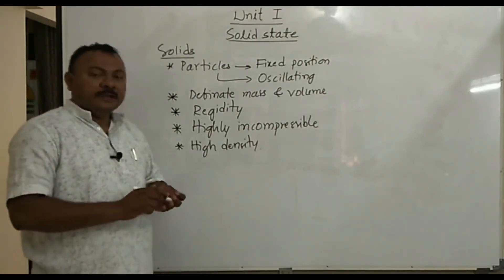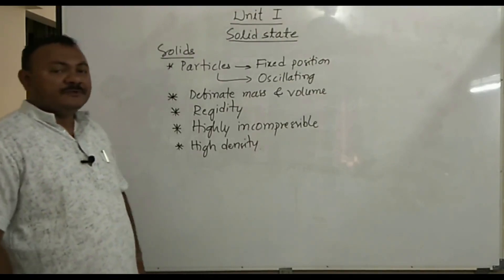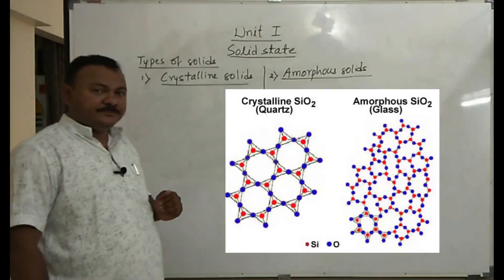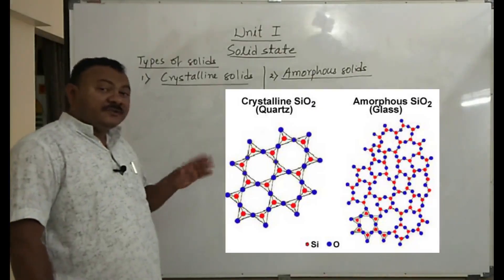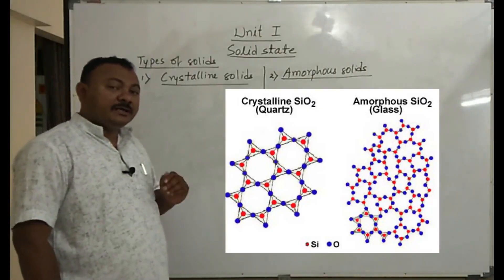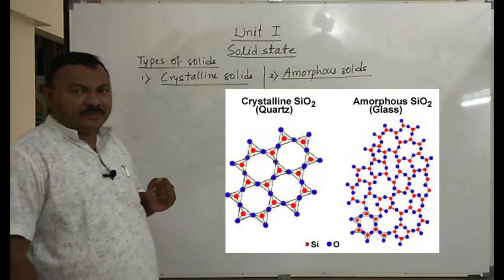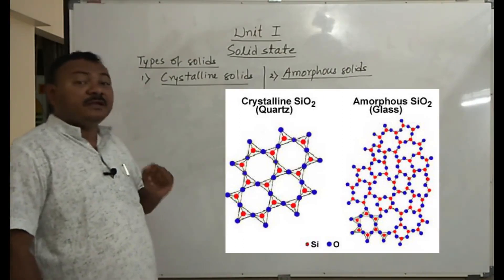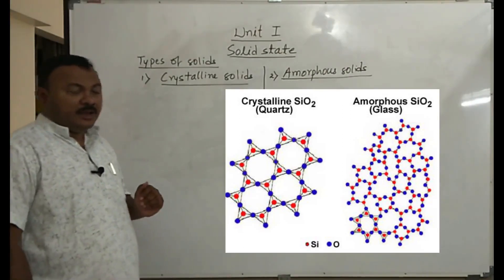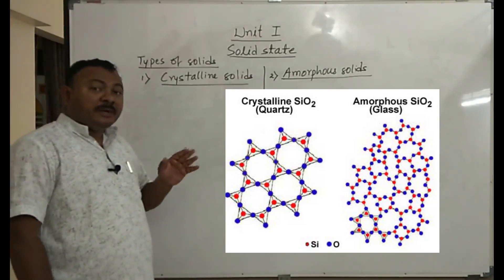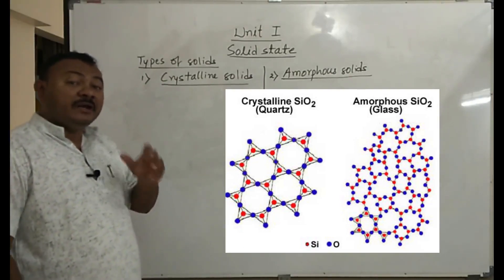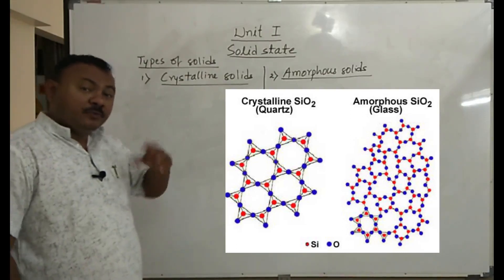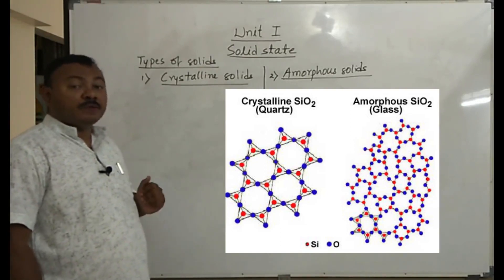After learning about the properties and definition of solids, we move to the next part — types of solids. In crystalline silica, silicon and oxygen atoms are arranged regularly and systematically, giving a definite geometrical shape. Whereas in amorphous silica, particles are arranged irregularly and we do not get a definite geometrical shape. On this basis, we classify solids as crystalline and amorphous solids.